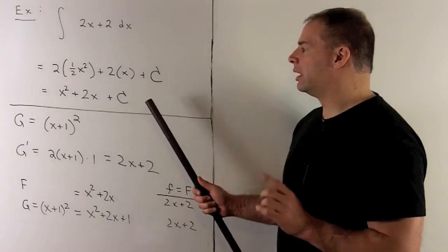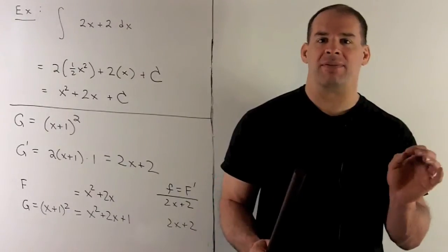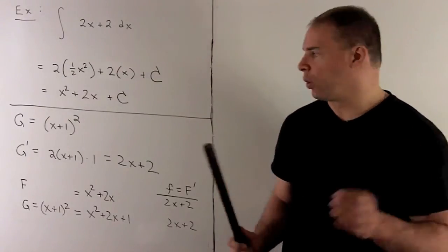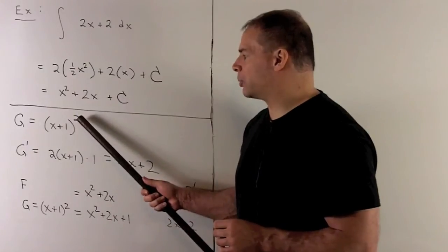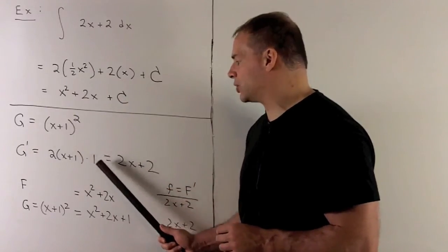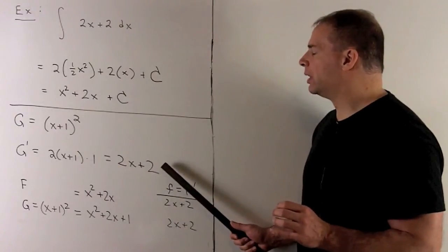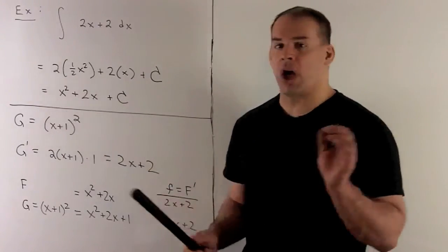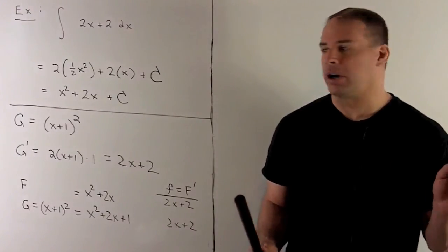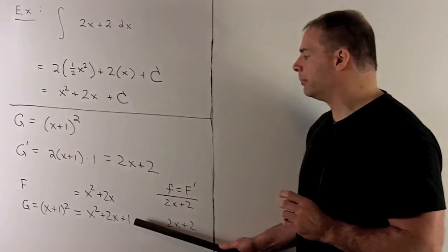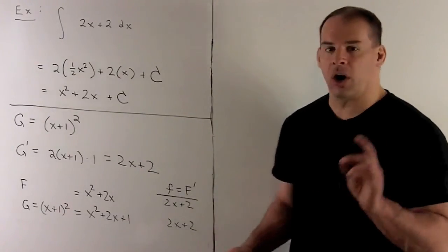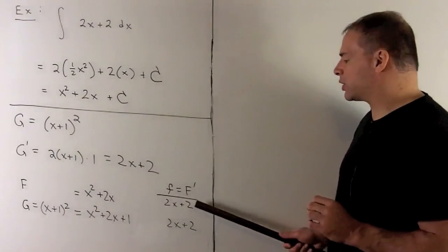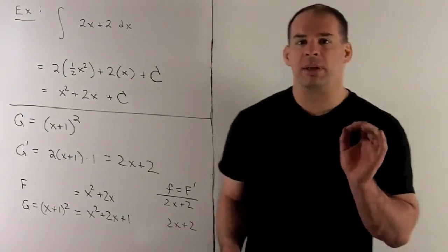Another approach: think of things that have 2x+2 as a derivative. If you take (x+1) squared and differentiate using the chain rule, you get 2 times (x+1) times 1, which is 2x+2. So x squared plus 2x is one antiderivative, and (x+1) squared is another. If we expand (x+1) squared we get x squared plus 2x plus 1, so F and G are not equal — they differ by the constant 1. Both have derivative 2x+2, confirming they are both valid antiderivatives.